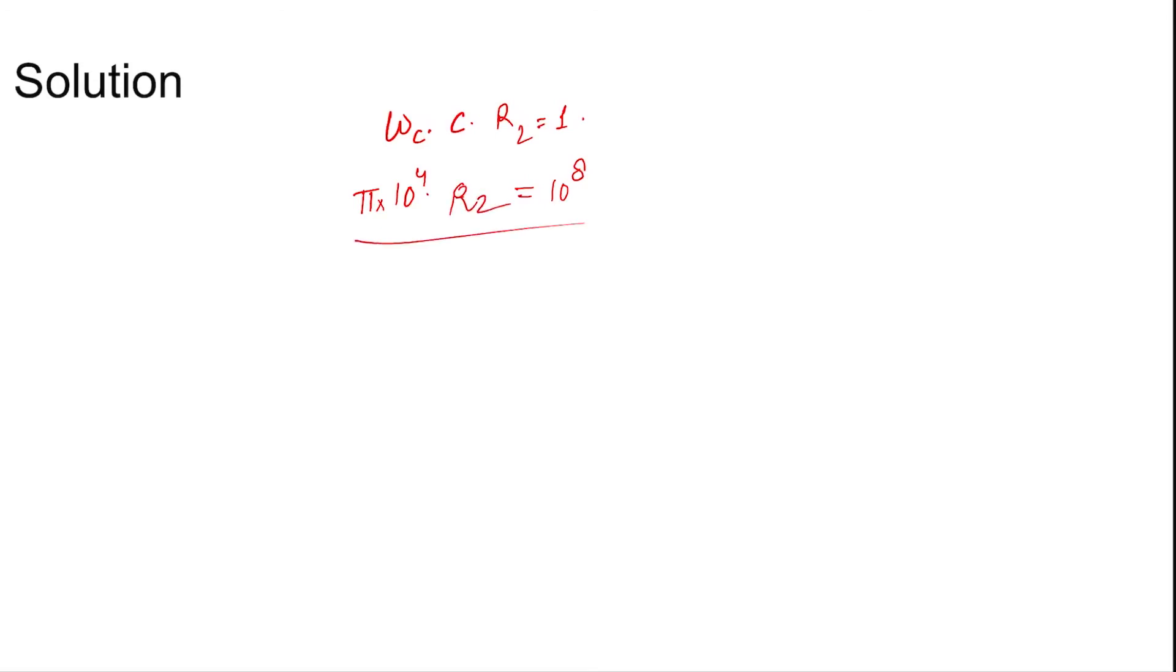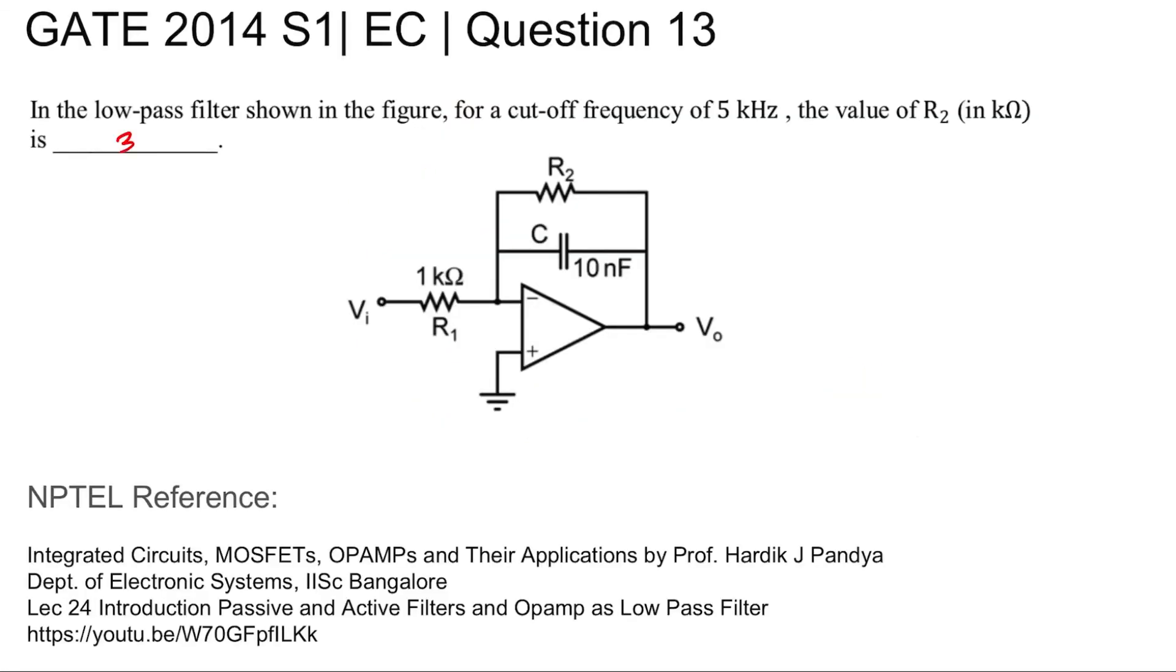Multiplied by R2, or 10⁴/π equals R2. So R2 equals 10/π kilo-ohms, which equals 3.1 kilo-ohms. The value of R2 in kilo-ohms is 3.1. This is done.